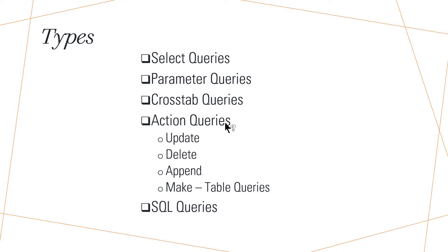An action query is a query which makes changes to or moves many records in just one operation. Under action queries, there are four types: update, delete, append, and make table queries.